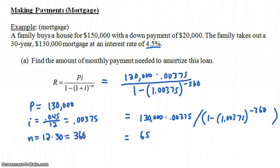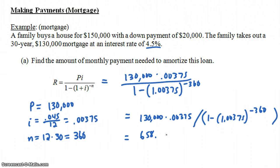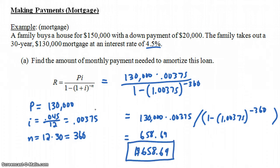The monthly payment is $658.69. Of course, this doesn't include things like property taxes and homeowners insurance, but the payment covering principal and interest would be $658.69. If you paid that amount each month for the next 30 years, the home would be paid off.